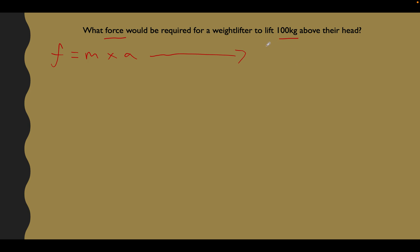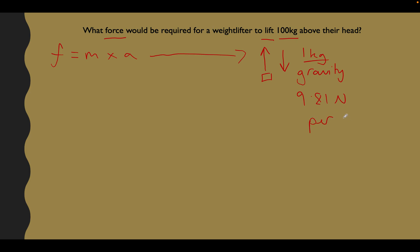So if we think about it, this weightlifter's going to have to apply an upwards force to lift this weight up. What force is coming down on every one kilogram of mass on Earth? There's a force coming down on all of us, which is gravity. So each kilogram that this weightlifter pushes in the upwards direction, he has to overcome gravity. And gravity is defined as 9.81 newtons per kilogram.